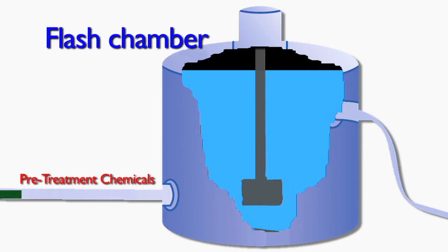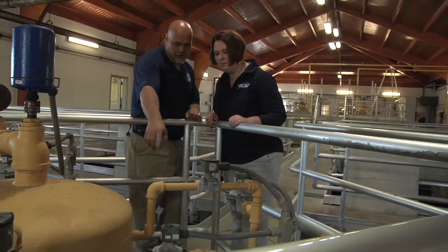Static mixers or flash chambers are used for mixing pre-treatment chemicals. When the pre-treatment chemicals are added, they should be thoroughly mixed with the raw water. Proper mixing of the chemicals can speed the process and even reduce the amount of chemicals used, and in the long run save money.